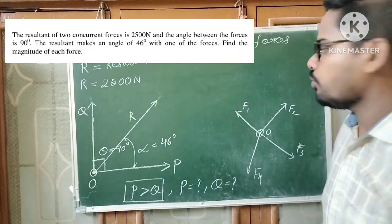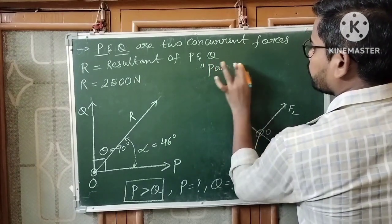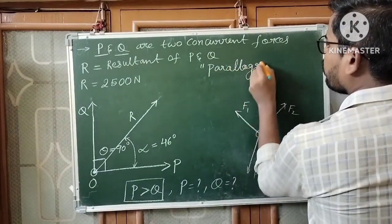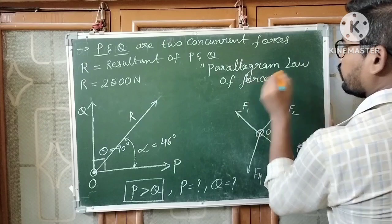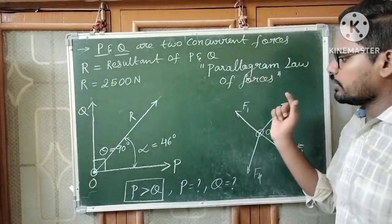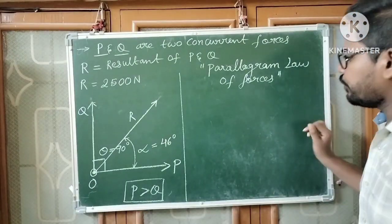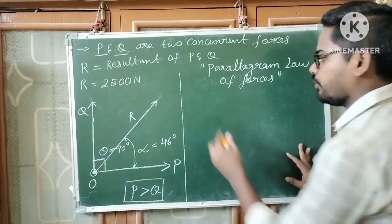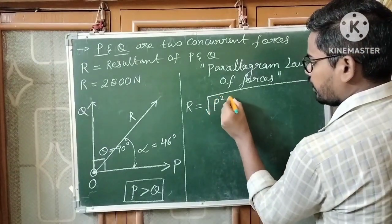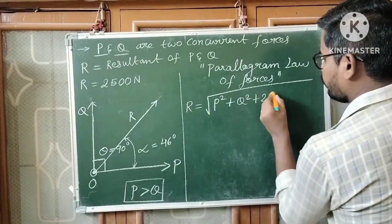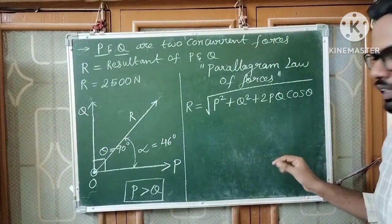I am going to apply the concept of the parallelogram law of forces — very important. From the parallelogram law of forces, the resultant of two concurrent forces is given by R equals the square root of P squared plus Q squared plus 2PQ cos theta.